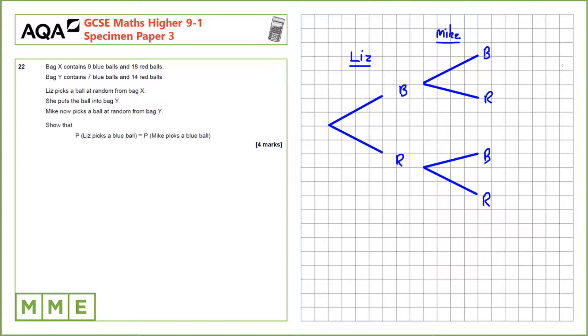In order to do this we use a tree diagram and we need to fill in some of these sections. This is the case that a blue ball is picked first by Liz and then a blue ball is picked by Mike. So we need some of these initial probabilities.